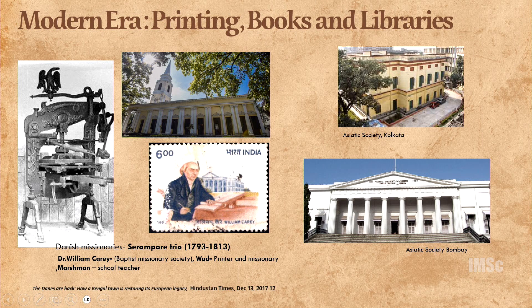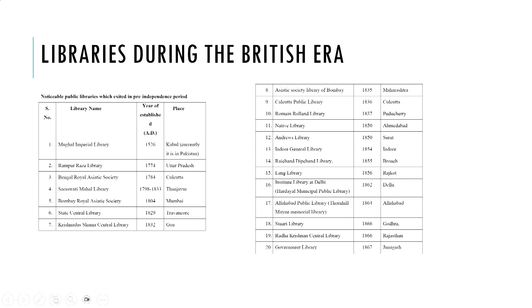That started changing with the printing press. The British and Portuguese introduced printing, but we should give credit to the Serampore Trio — Serampore is very close to Calcutta. They printed books in 30 Indian languages. That's when for the first time Tamil, Bengali, Kannada, and all these books were printed. The earliest libraries include the Asiatic Society books and the Asiatic Society Bombay — the earliest modern libraries we have. Later, during the British era, a lot of expansion in libraries happened.